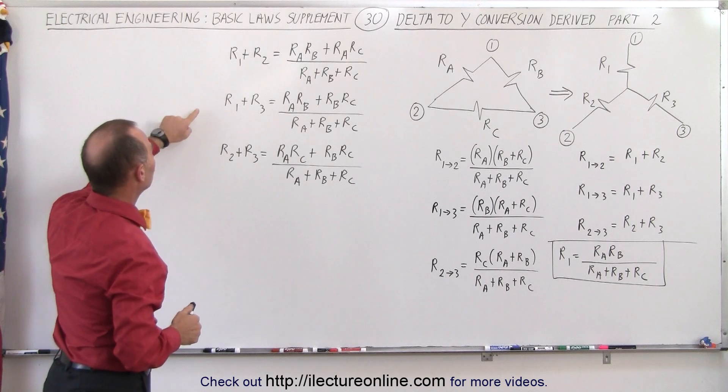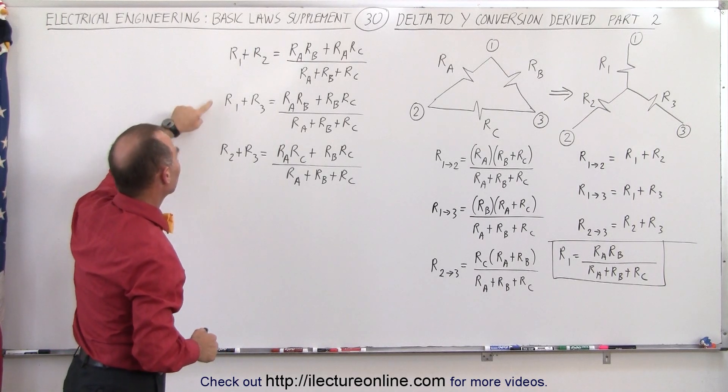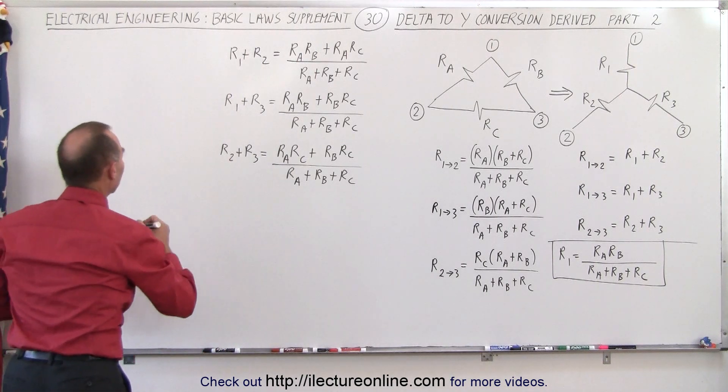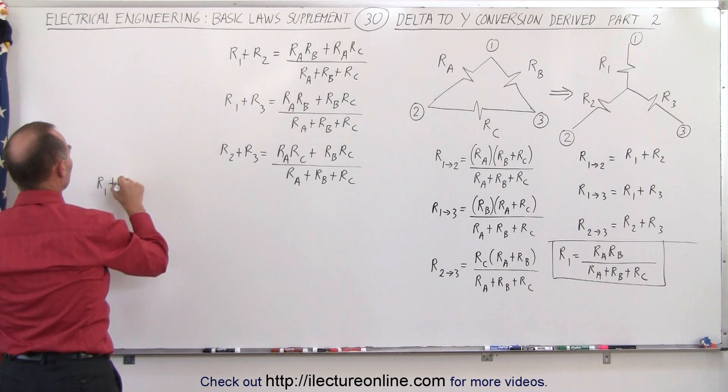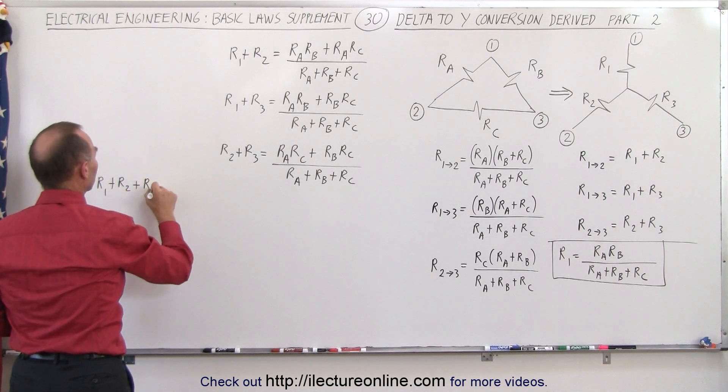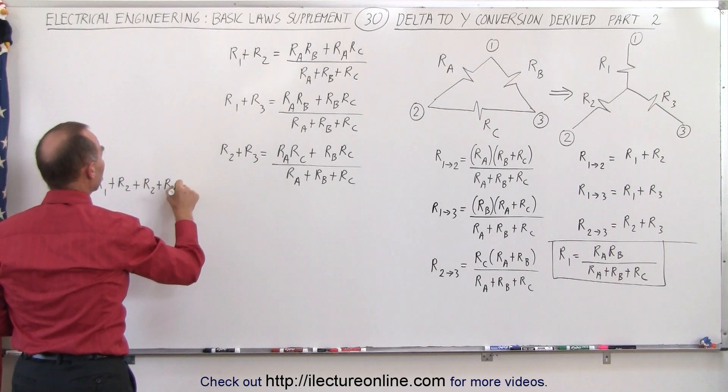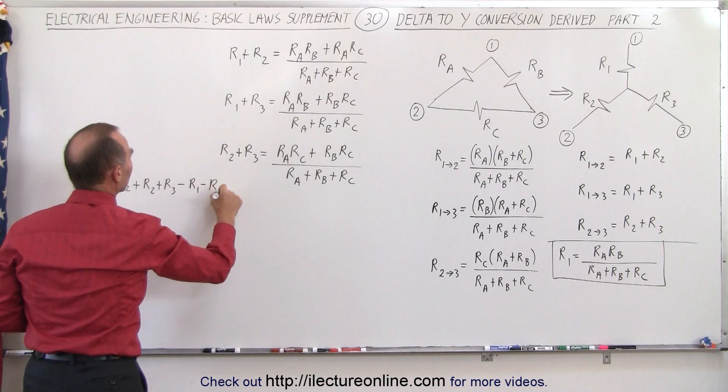So to get R2 we're going to add this and this together on the left side and subtract this from the left side. So in that case we're going to take R1 plus R2, we're going to add that to this, so plus R2 plus R3 and subtract from that R1 and R3.